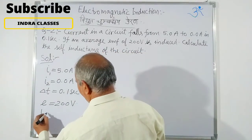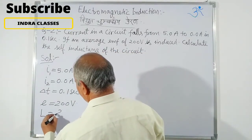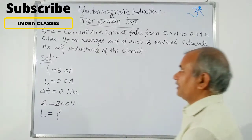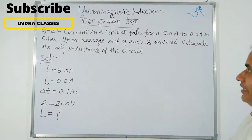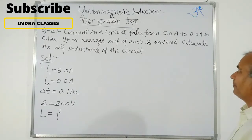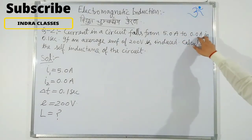We need to find L. Given: I1 = 5.0 A, I2 = 0.0 A, ΔT = 0.1 seconds, EMF = 200 volts.